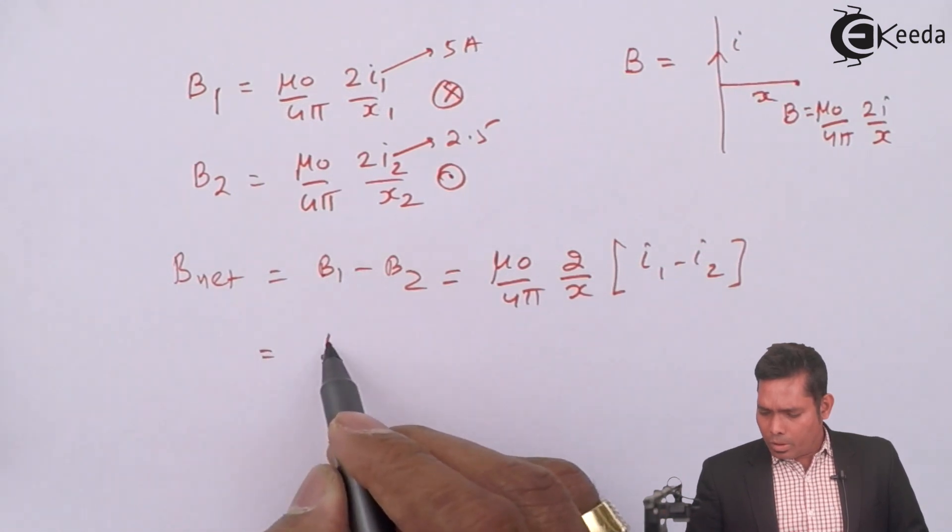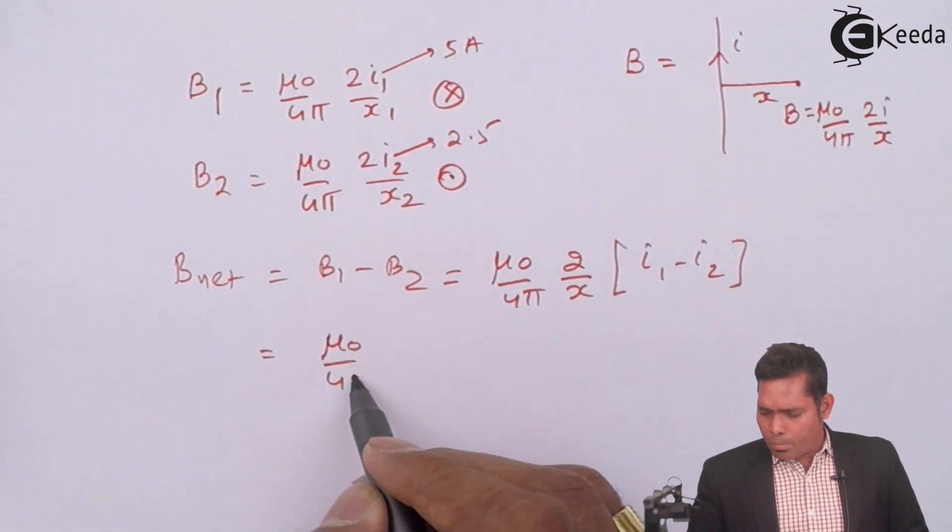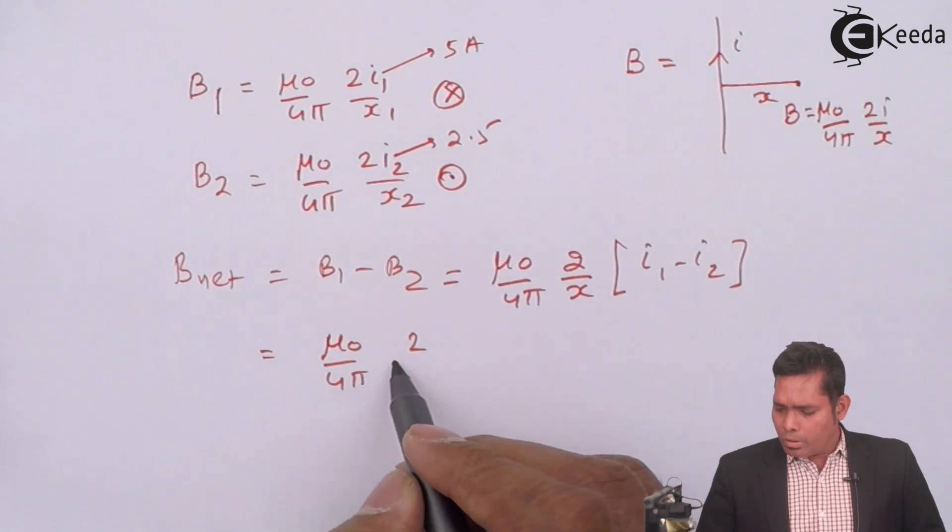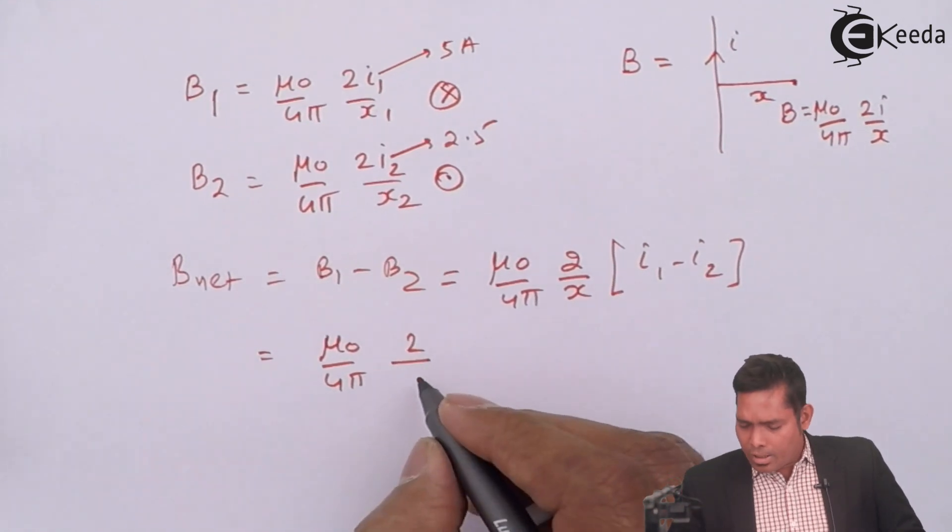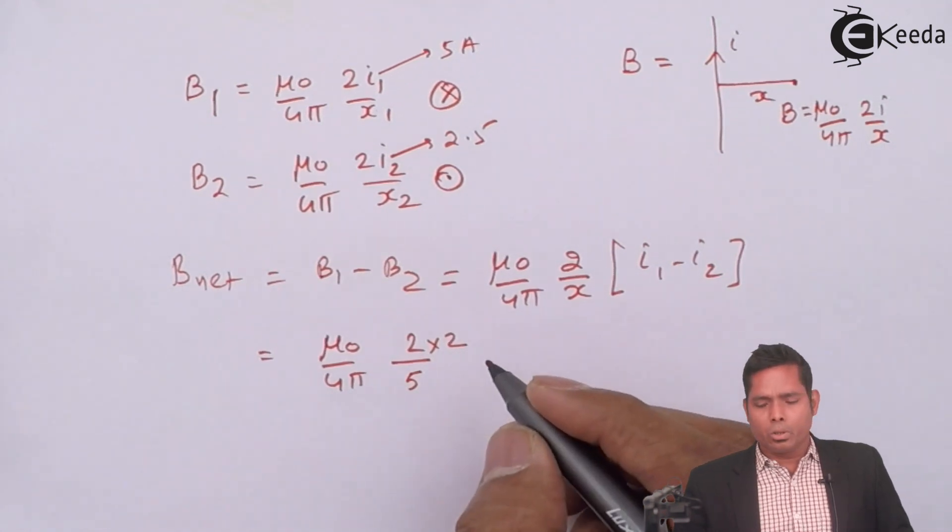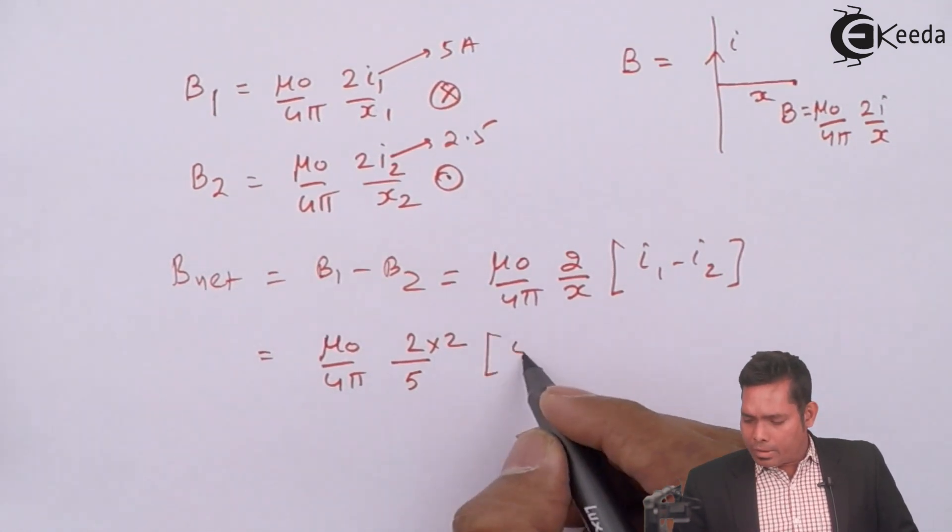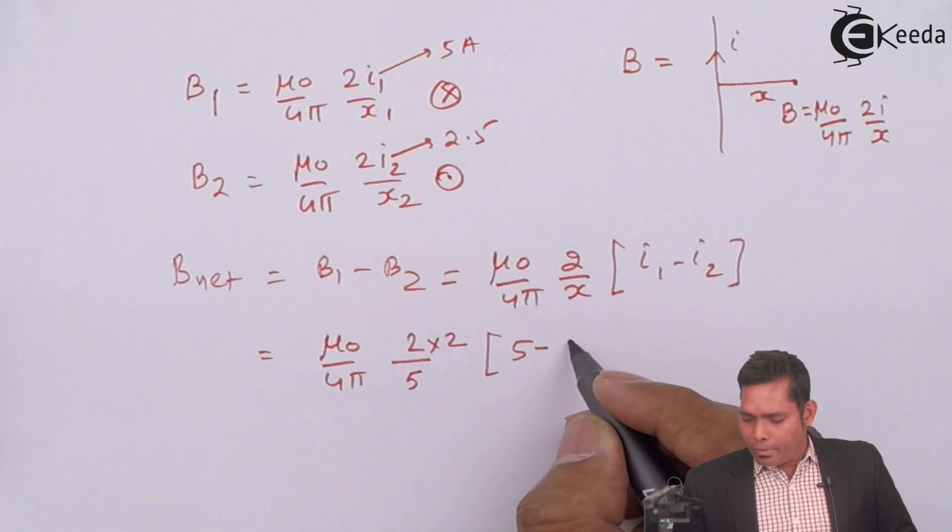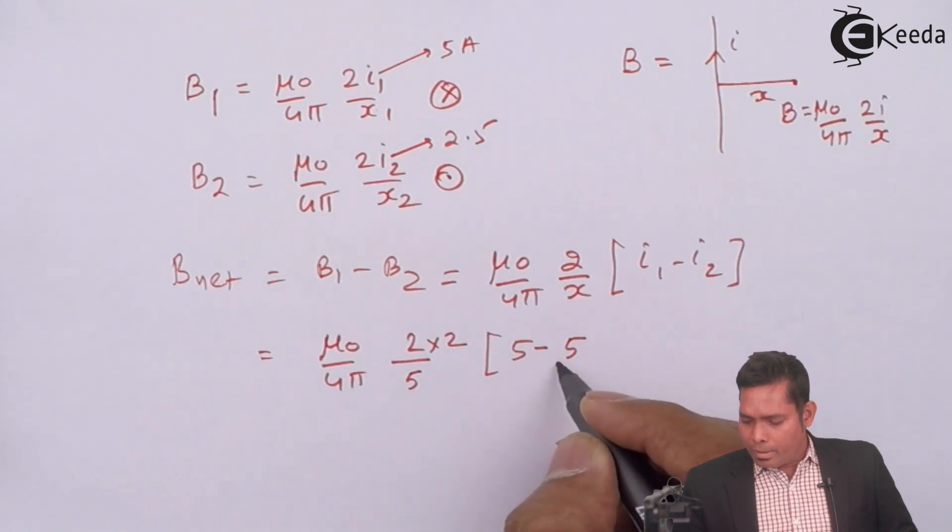This comes out to be mu 0 upon 4 pi 2 divided by x. X is 5 by 2. That is the midpoint between the two wires. i1 is 5 and this is 2.5 that is 5 by 2.